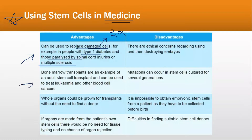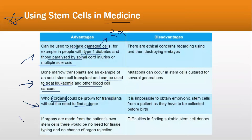Another advantage is that bone marrow transplants are an example of an adult stem cell transplant and can be used to treat leukemia and other blood cell cancers. Furthermore, a whole organ could be grown for transplants without the need for a donor. You can also create organs with the help of stem cells, and if organs are made from a patient's own stem cells, there would be no need for tissue typing and no chance of organ rejection.